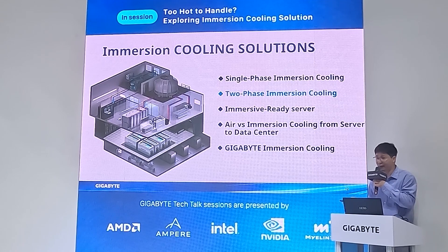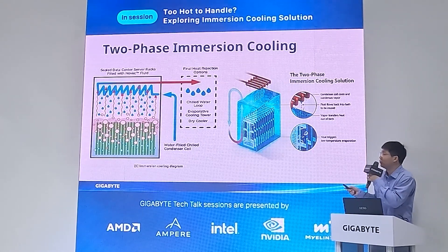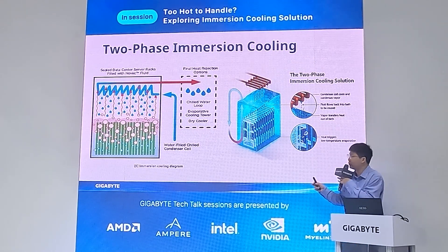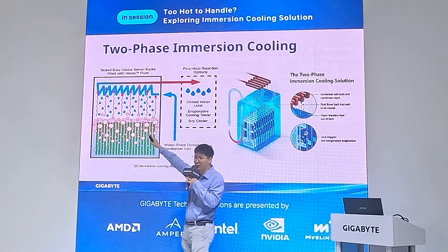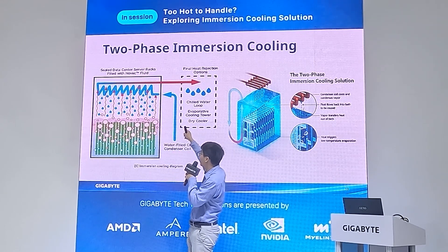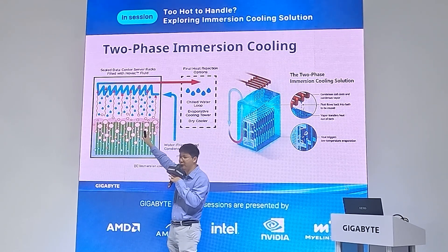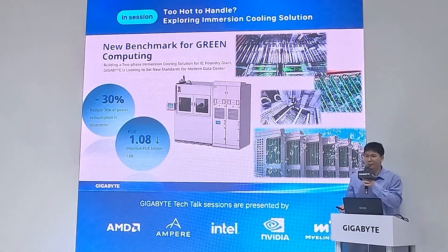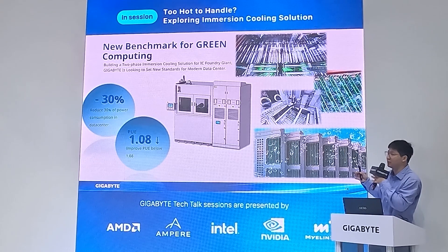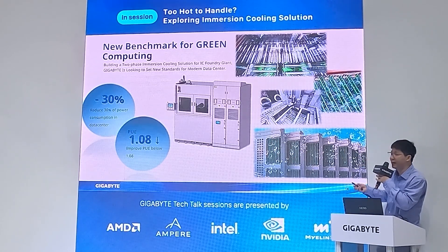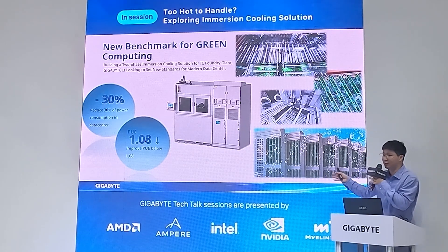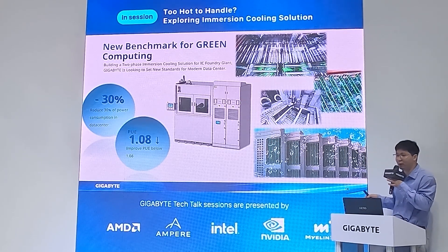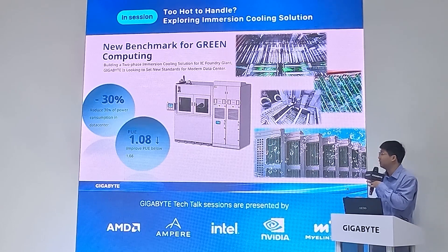Now for two-phase immersion cooling. We call it two-phase because when the liquid reaches its boiling point, it transfers from liquid to vapor. After temperatures drop via the cooling tower, the vapor transfers back to liquid and returns to the tank. GIGABYTE has a very successful case with an IC foundry giant, where power consumption was reduced by 30% and PUE lowered to 1.08, assisting the customer toward carbon zero emission by 2050.